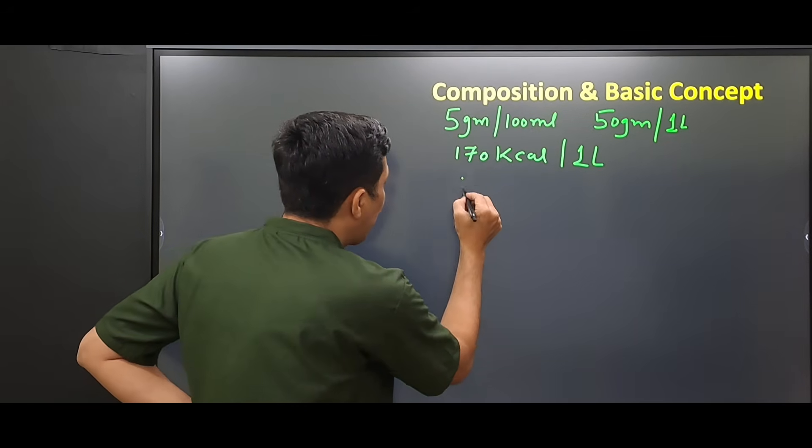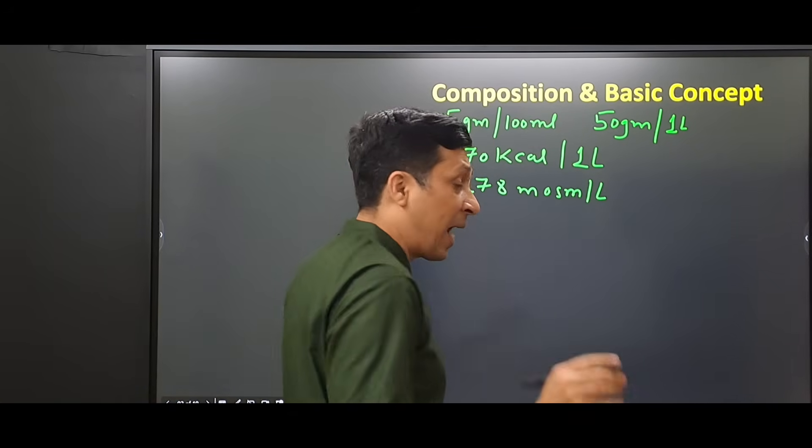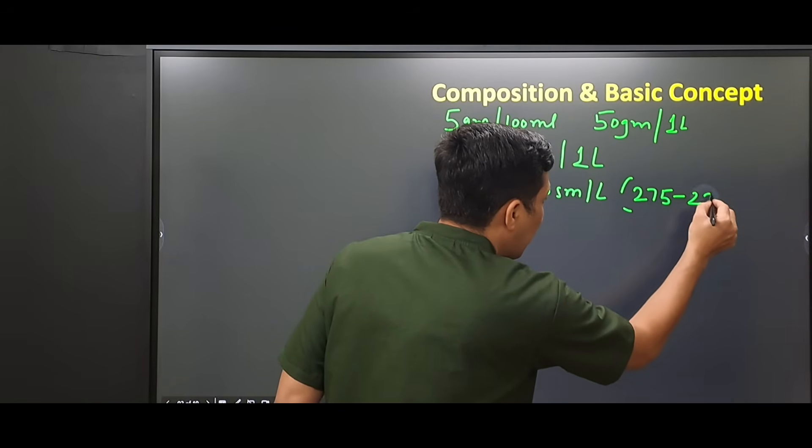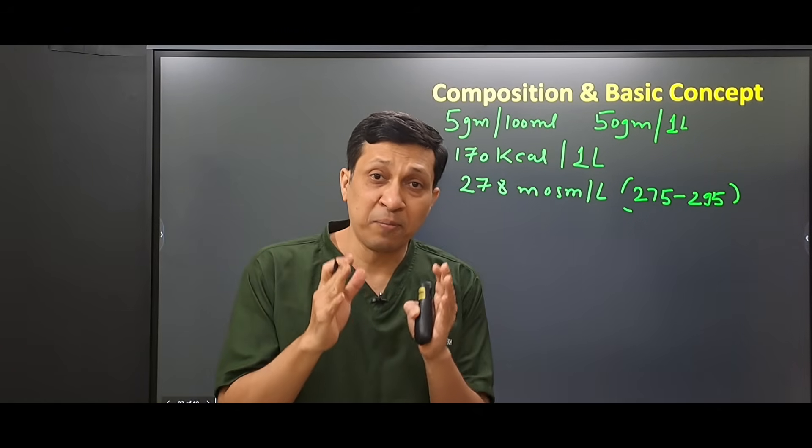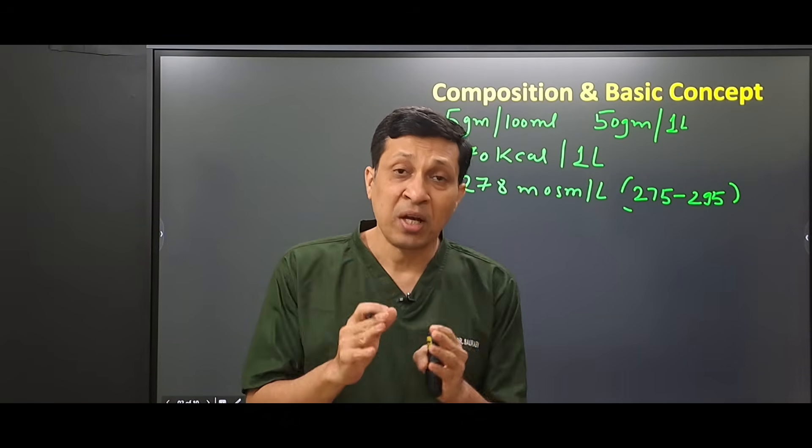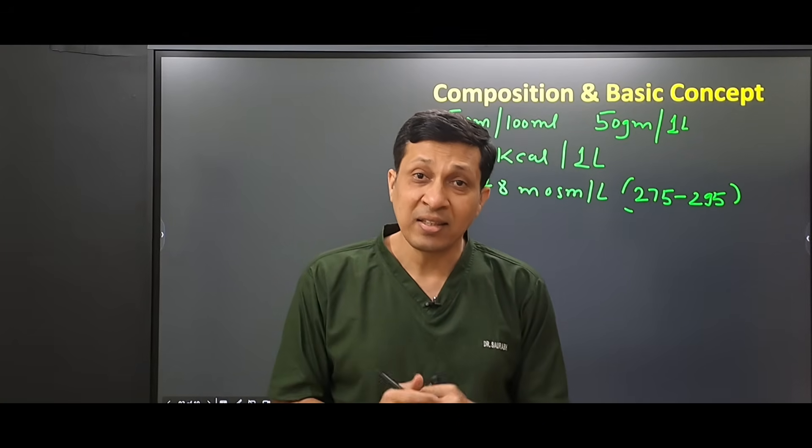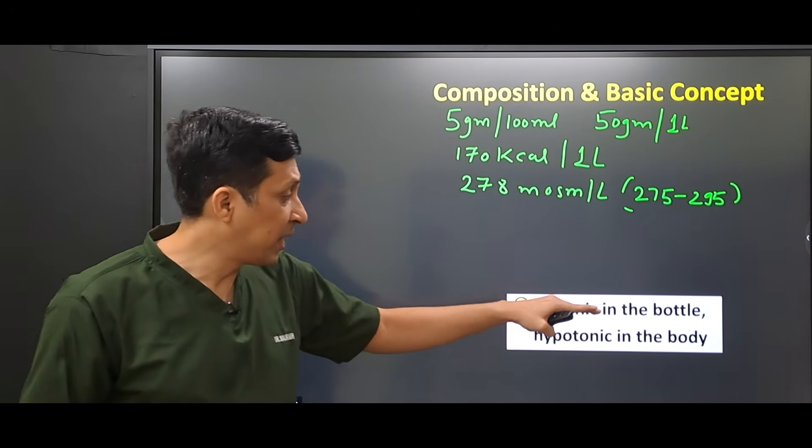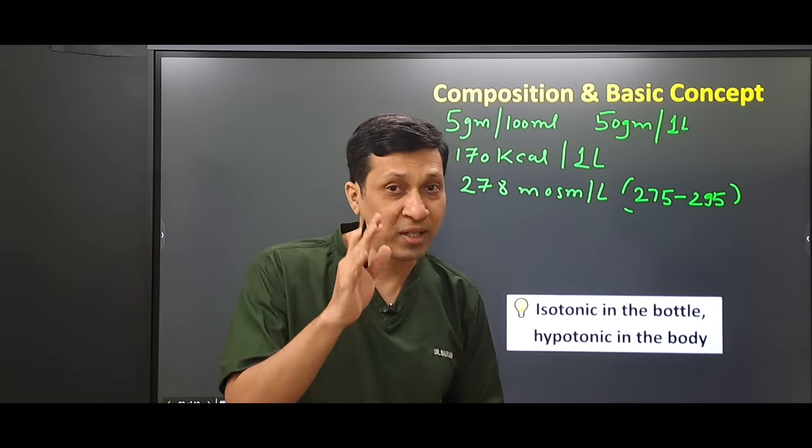What is the osmolarity of this fluid? The osmolarity is 278 milliosmoles per liter, which is similar to plasma osmolarity of 275-295. According to this, dextrose 5% must be an isotonic fluid. But what happens when this fluid is introduced in the body? The glucose is completely metabolized and what remains is only plain water, and then this fluid becomes hypotonic. So this fluid is isotonic in the bottle but hypotonic in the body. This is a very important basic concept.